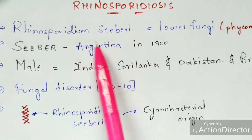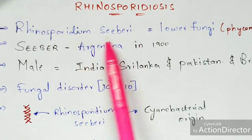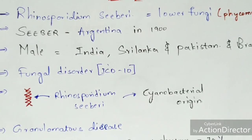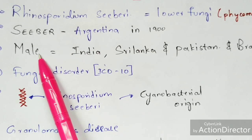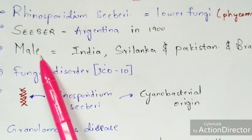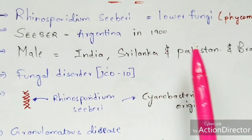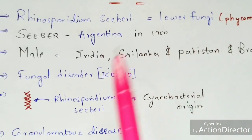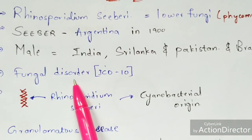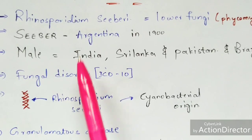Seeber is a scientist from Argentina who discovered rhinosporidiosis in 1900 using an electron microscope. Rhinosporidiosis is observed in 75% of male human beings in countries like India, Sri Lanka, Pakistan, and Brazil.